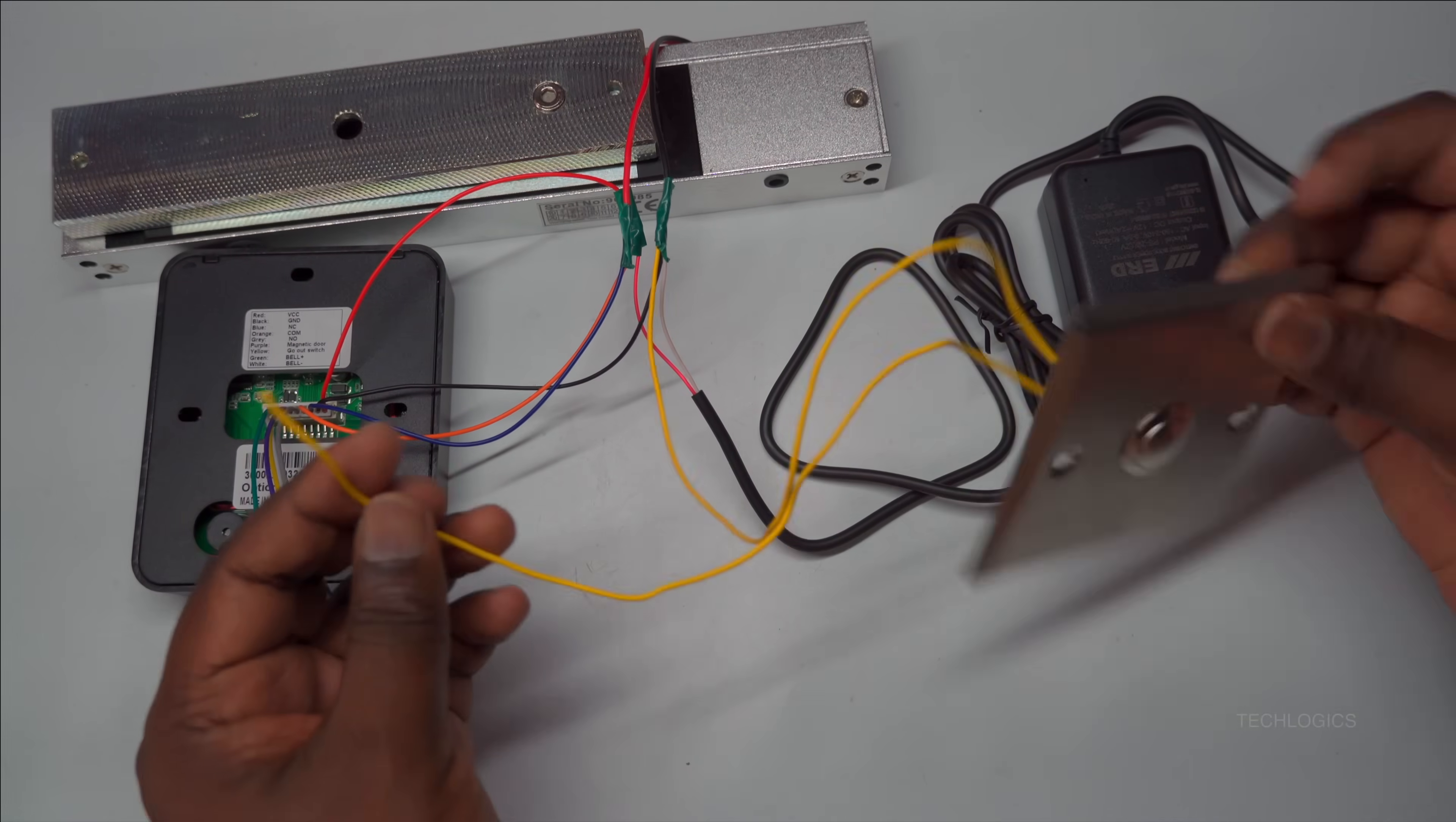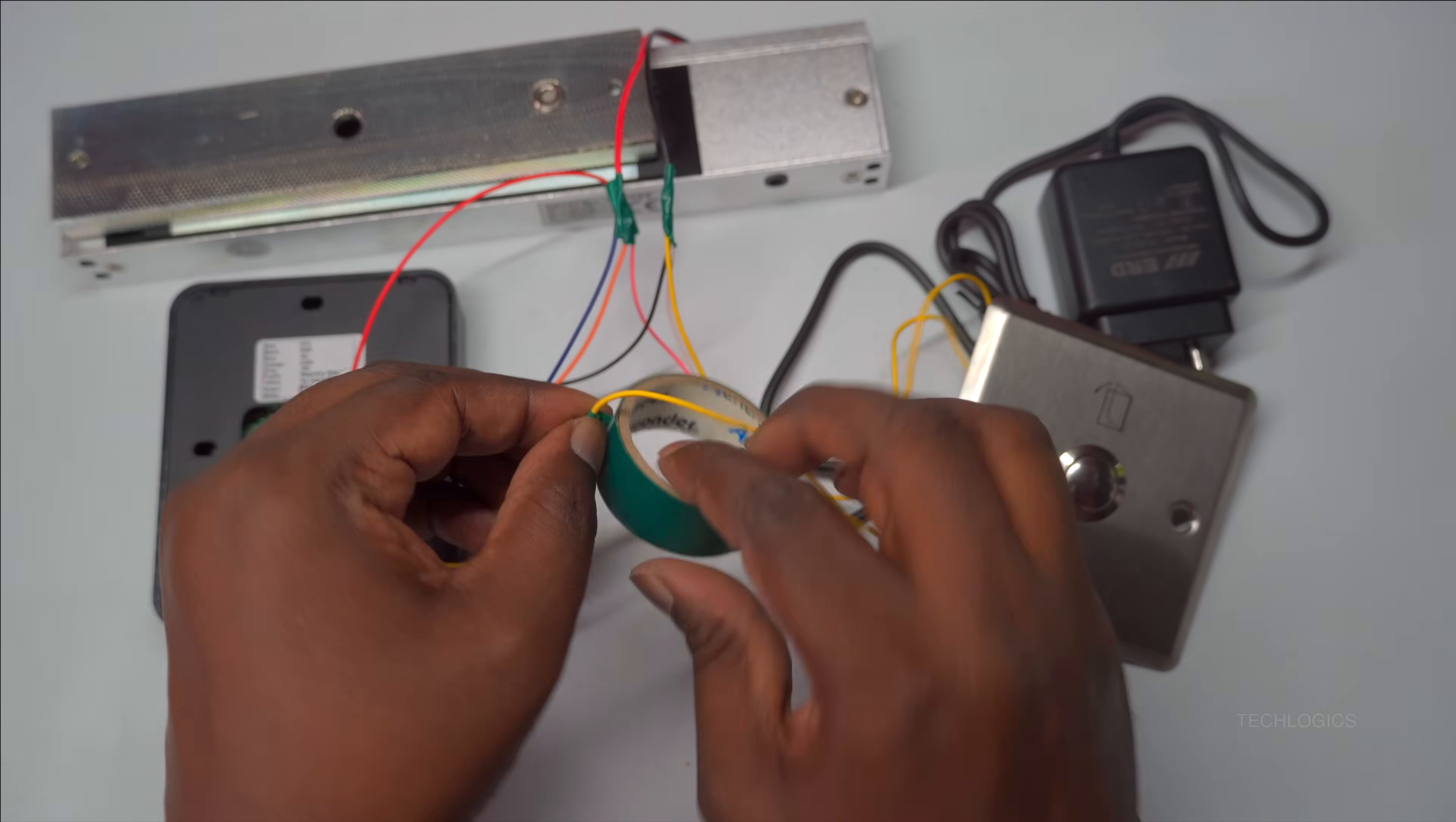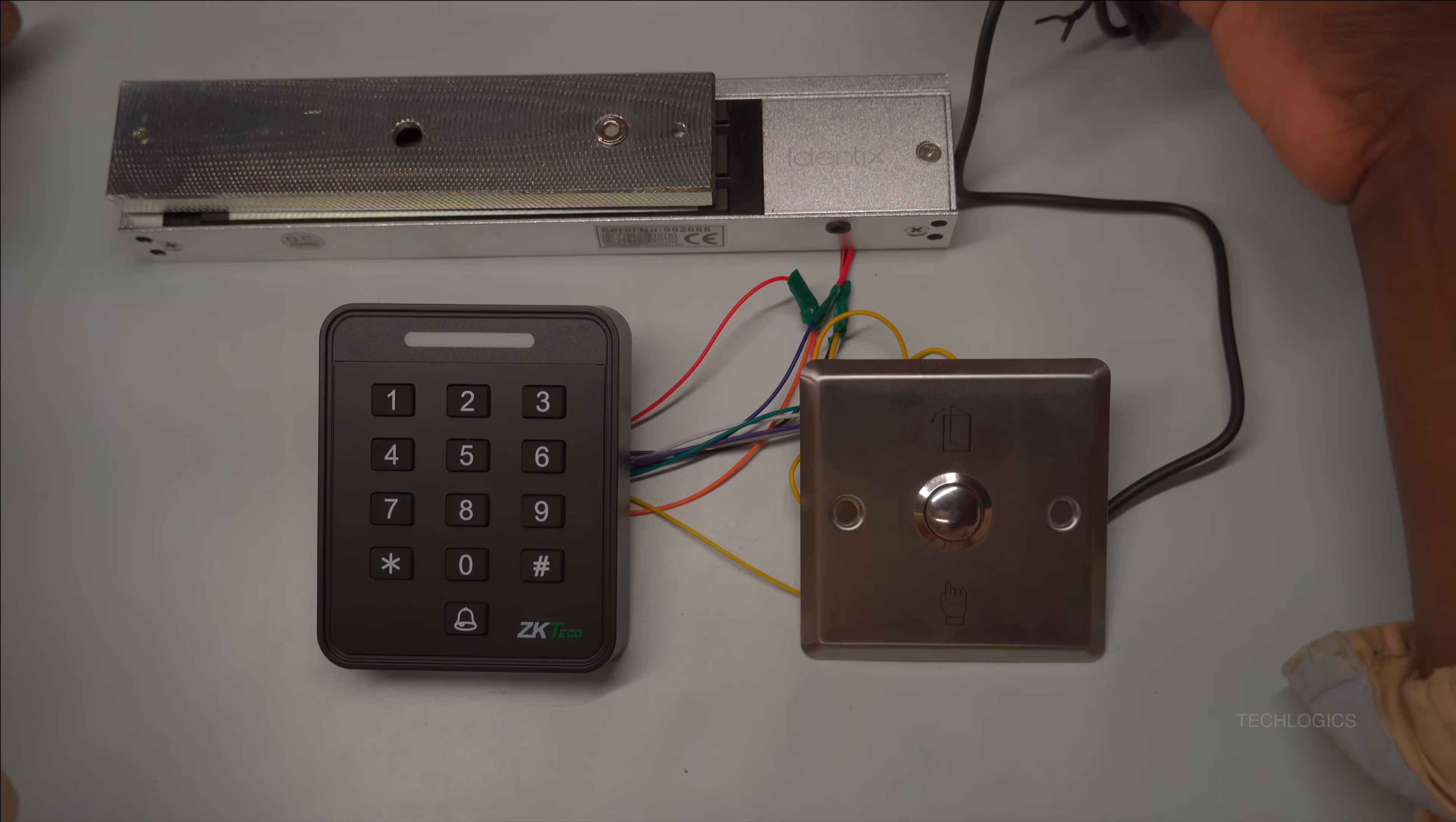Once you have finished the wiring process, it's time to power up the system to perform a thorough check. Make sure all connections are tight, secure, and insulated properly using insulation tape to prevent any accidental short circuits or loose contacts. When you connect the DC power adapter, observe the access controller for any signs of activity. When powered, the access controller should indicate that it is functioning correctly if the red or blue LED starts flashing. This flashing light confirms that the wiring is correct and the system is ready for testing.